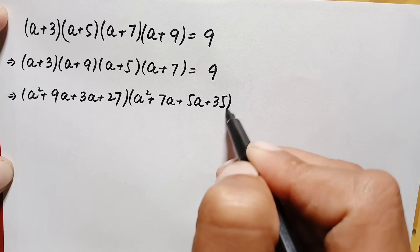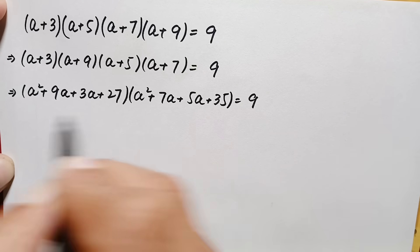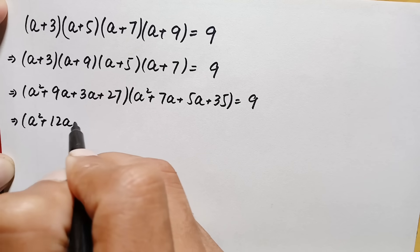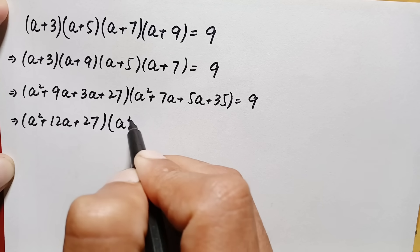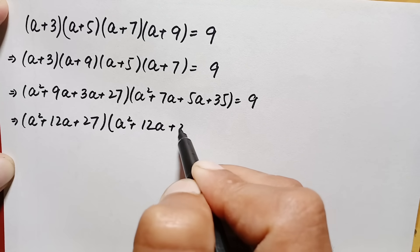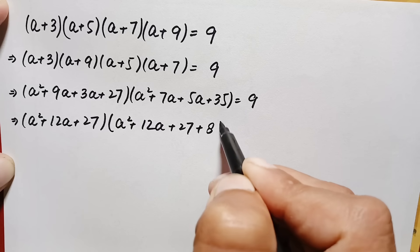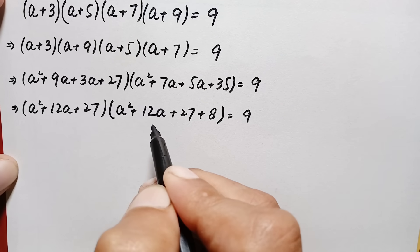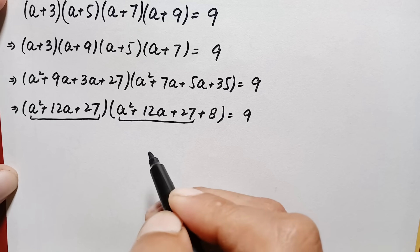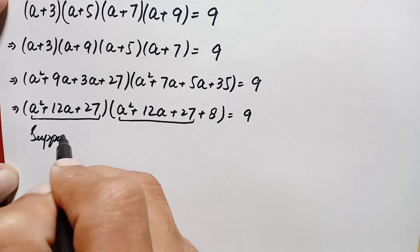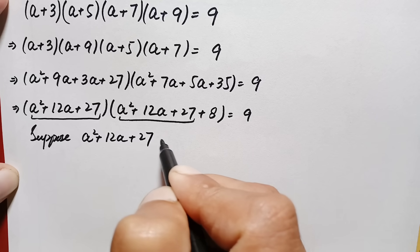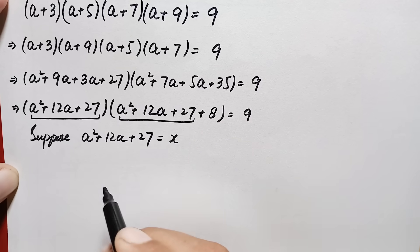Simplifying both expressions: the first becomes a²+12a+27, and the second becomes a²+12a+35. We can write 35 as 27+8, so the equation becomes (a²+12a+27)(a²+12a+27+8) = 9. Notice that a²+12a+27 is common to both expressions, so we make a substitution.